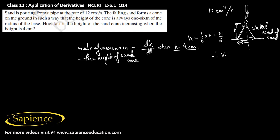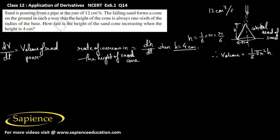First we have to find the volume of the cone. Volume of the cone is 1/3 π r² h. Sand is pouring from the pipe at the given rate, so dV/dt represents the volume of sand poured on the ground per second, which is given as 12 cm³ per second.